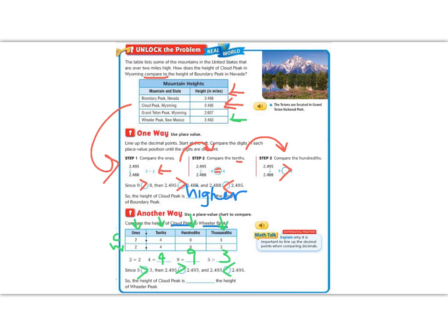So the height of Cloud Peak is taller, higher than the peak at Wheeler Peak.